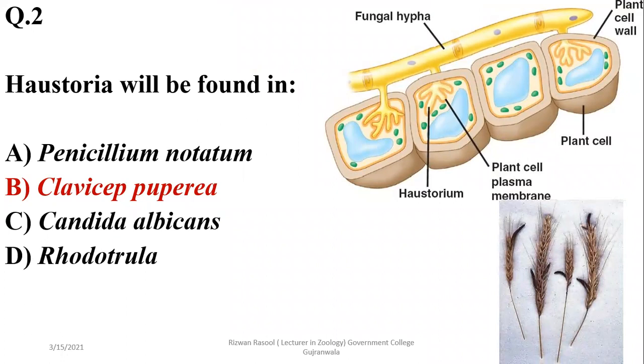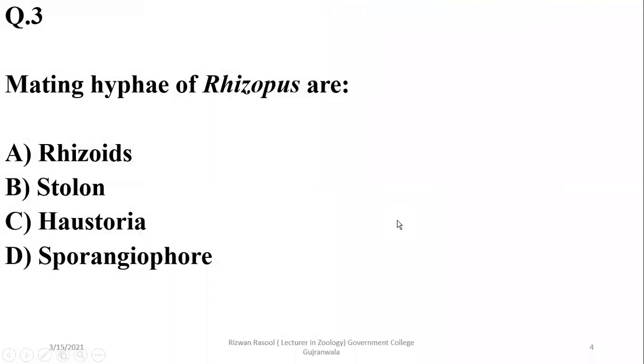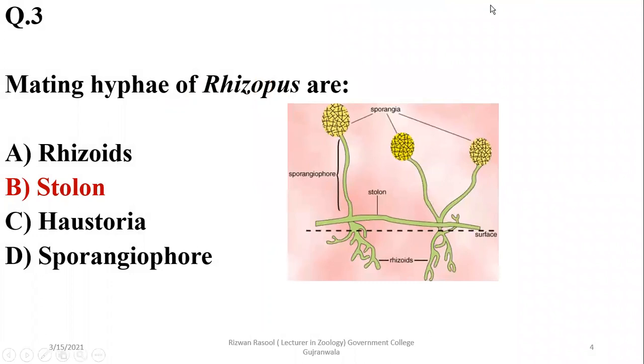As you can see, the hyphae of parasitic fungi penetrating in the cells are known as hostorium or hostoria. Mating hyphae of Rhizopus are stolons, and these are the hyphae which grow horizontally on the ground or substratum, so the right option is B, which shows mating process.